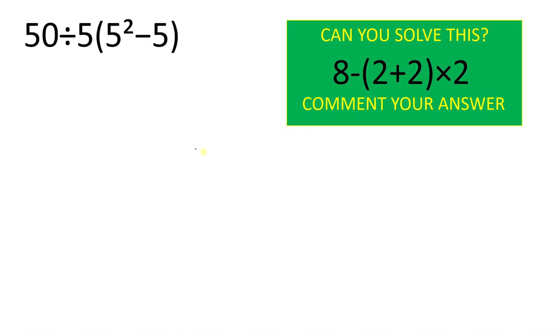Okay, time's up. Here we have 50 divided by 5 where in parenthesis is 5 square minus 5. So here we will follow order of operation, that is PEMDAS.